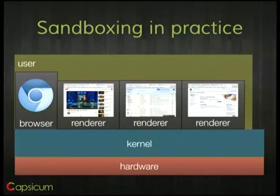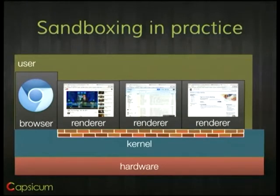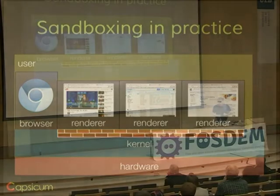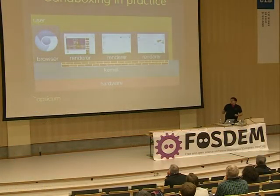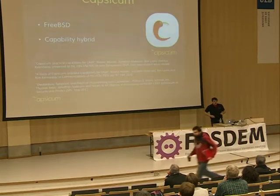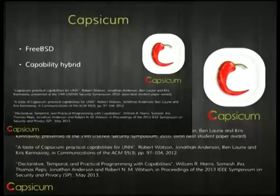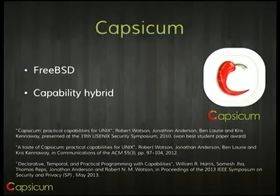So what a browser like Chromium does in order to try and address this is to split itself up into a bunch of little processes. You have the browser process, and then you have several renderers. The browser runs with the normal ambient authority, and the renderer processes run with some kind of protection put underneath them to stop them from doing stuff. And Capsicum is a mechanism for implementing that sandboxing regime.